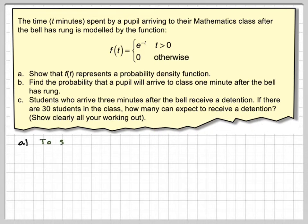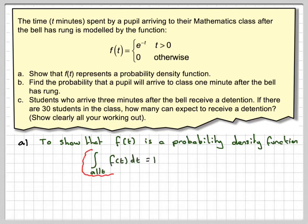So the first thing we've got to do, we've got to show that f of t is a probability density function. If that is true, then what we've got to show: if we integrate the function with respect to its variable t, then that has to be equal to one for all values of t. This is defined from t greater than zero, so we're going to have to do from zero up until infinity.